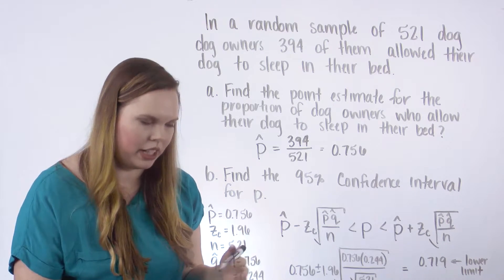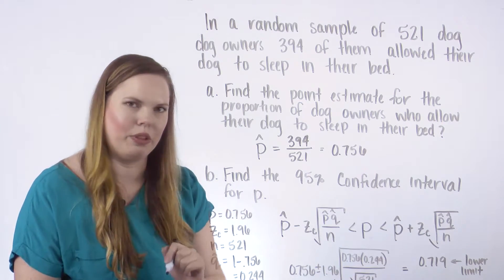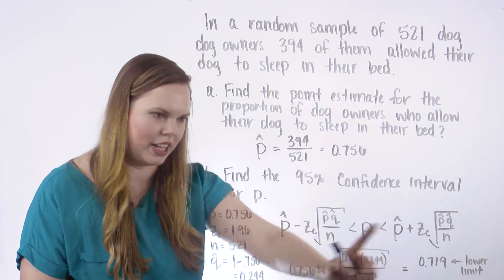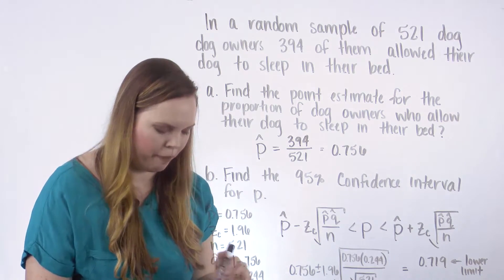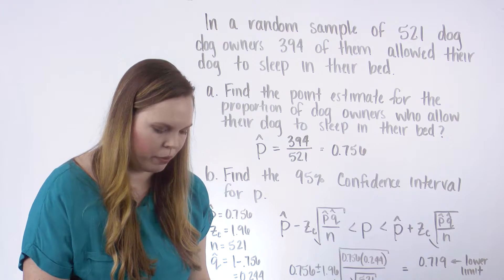And then our upper limit, if we do this same thing, but then with a plus sign, we have it plus sign here, minus sign here, our upper limit is 0.793.